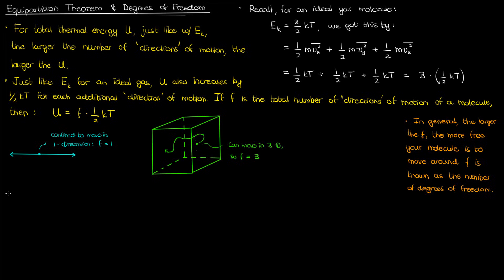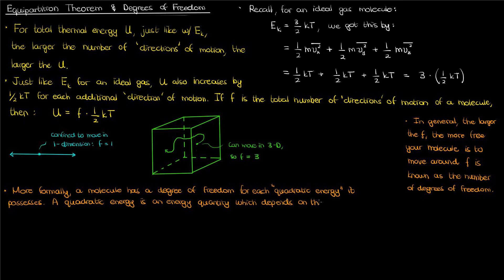But counting the number of degrees of freedom for a molecule can be pretty subjective if we use the number of directions it can travel as an estimate of F. So is there a more formal exact definition of F? There is. More formally, a molecule has a degree of freedom for each quadratic energy it possesses. A quadratic energy just means an energy quantity which depends on the molecule's velocity or position in a quadratic manner.